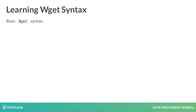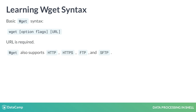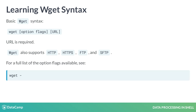The basic syntax for wget has a similar structure to curl: wget, option flags, URL. The URL is also required for the wget command to run successfully. wget supports a large number of protocol calls for data stored on servers. For a full list of the options available, refer to wget --help.